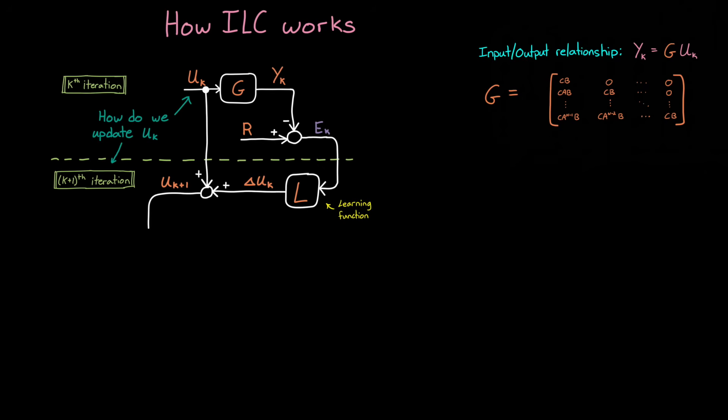All right, so now that we have an updated u, we input that into the system, which produces y_k plus 1, and then we compare that to the same reference as before, and we get a new error for this second iteration, and start the cycle over again.